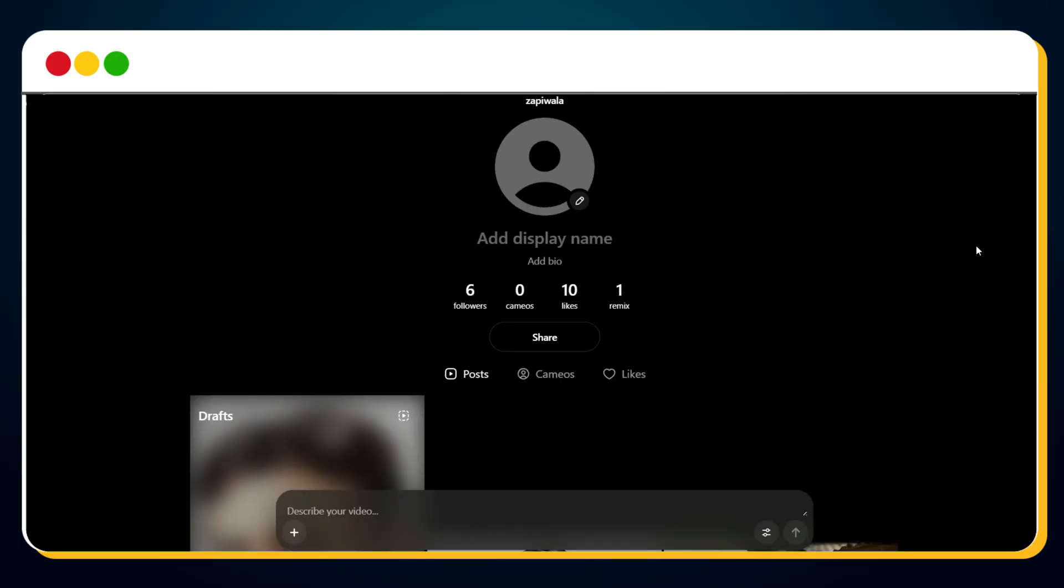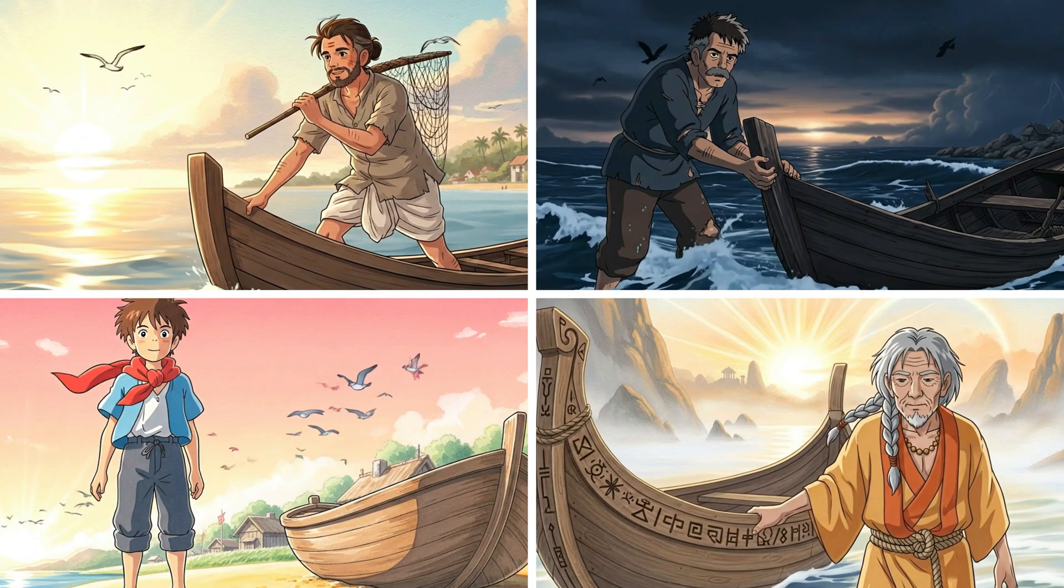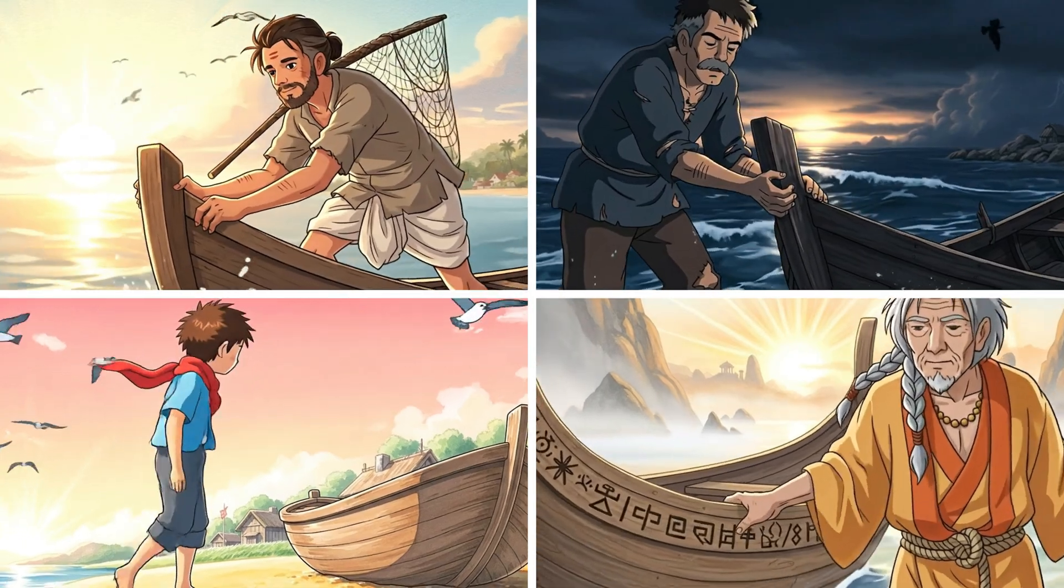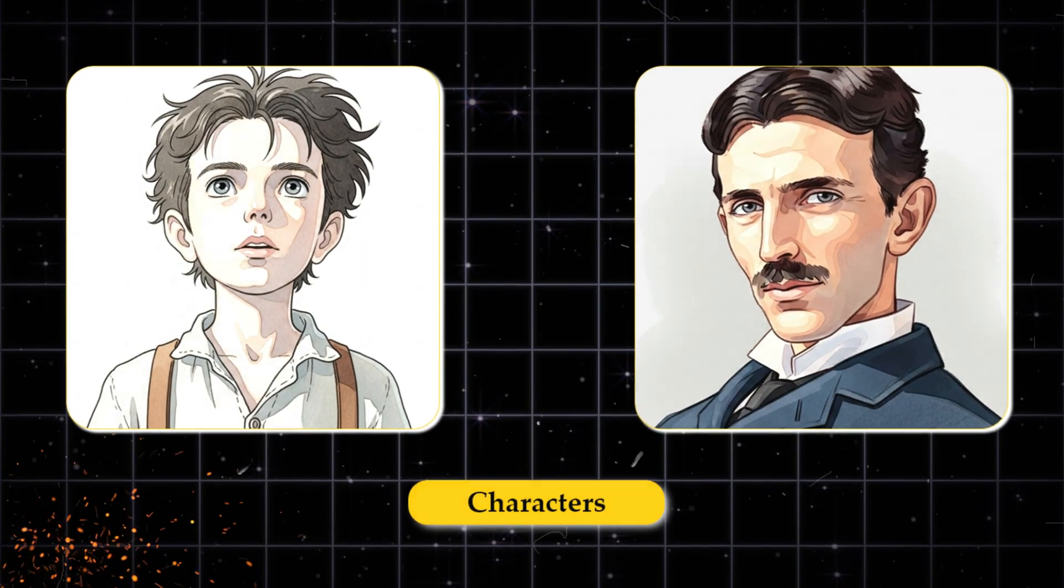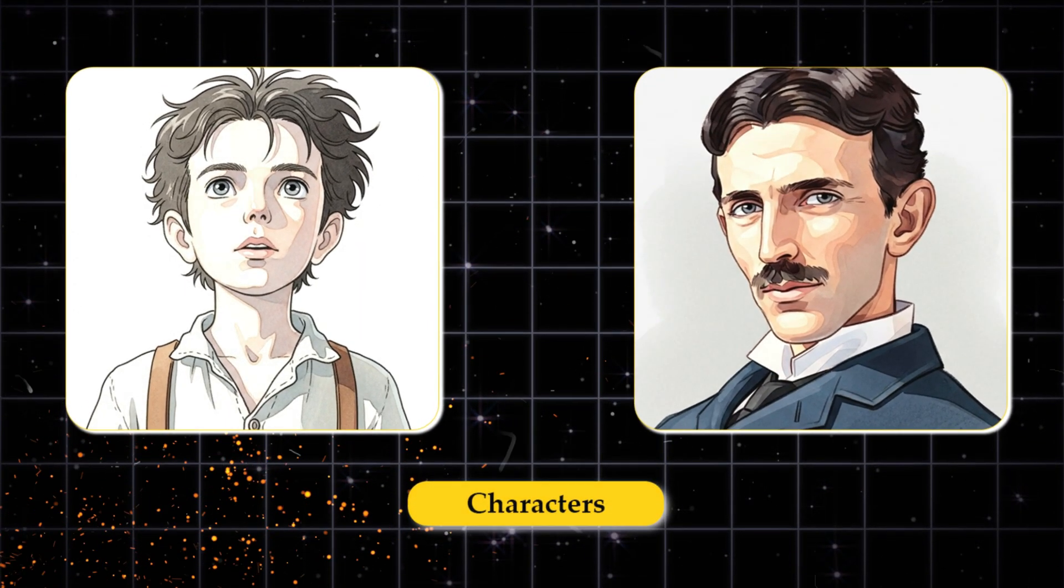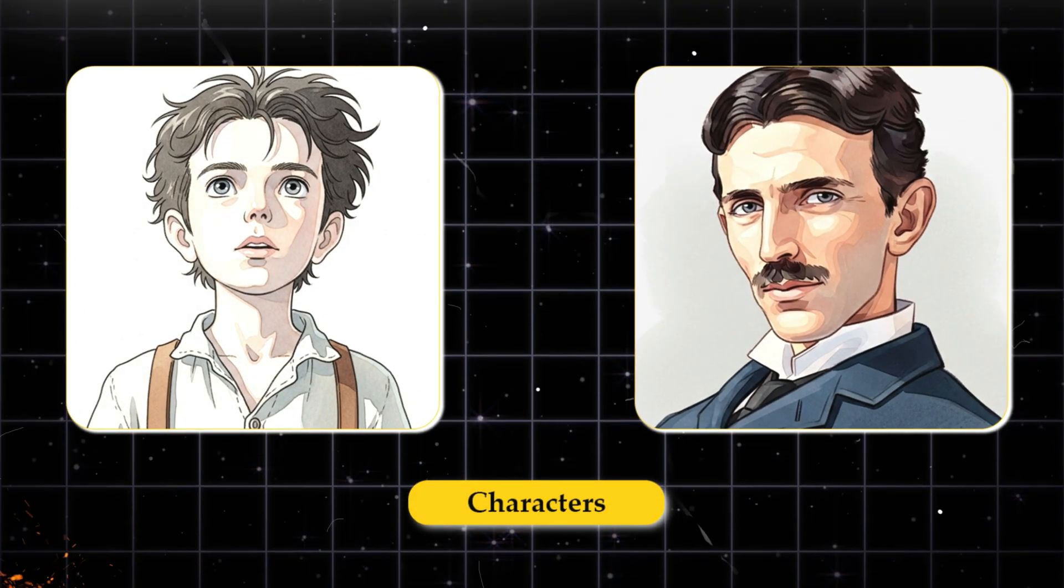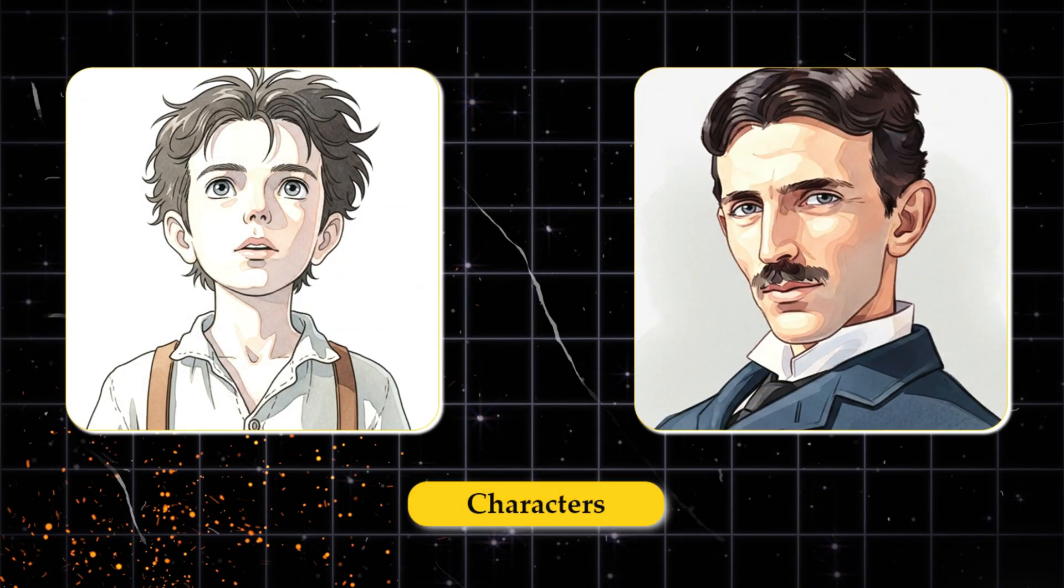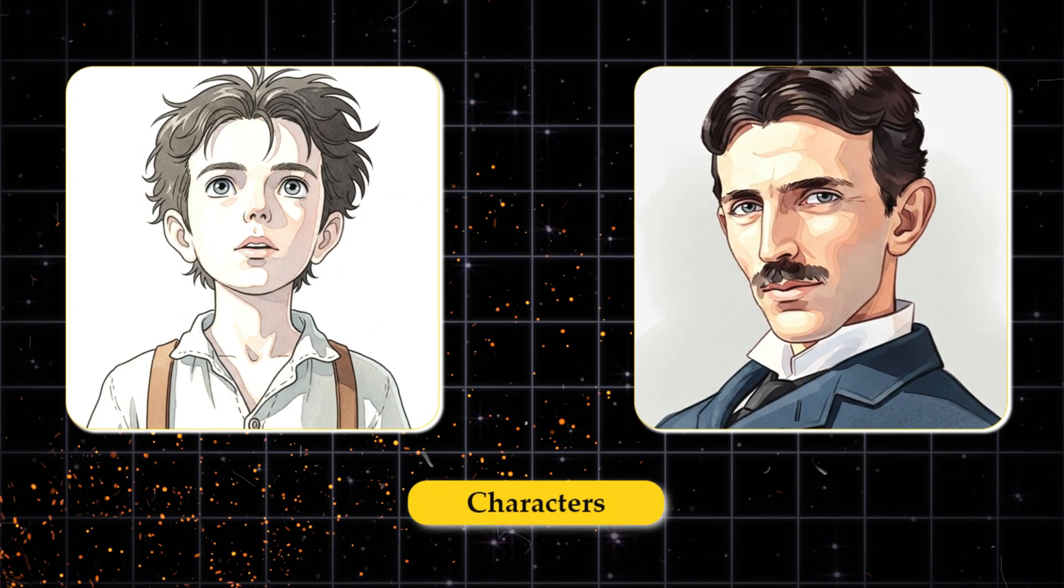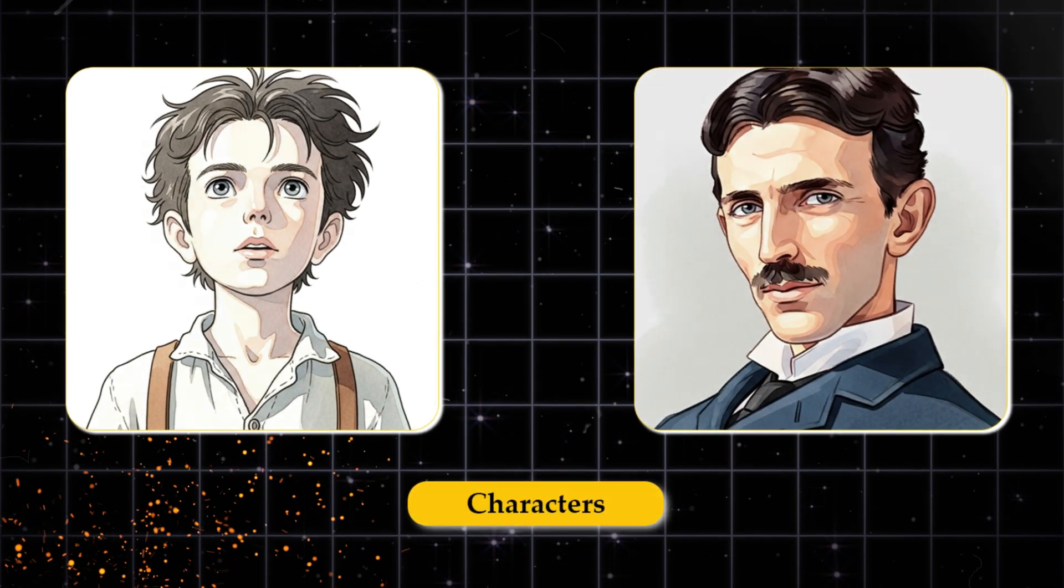Before we start using our prompts inside Sora 2, let's fix one last thing, character consistency across scenes. Do you remember those two character images we created earlier? Young Tesla and Adult Tesla? Now the question is, how do we know which version appears in which scene? This is where most creators get confused. Using the wrong character at the wrong point can break your story's flow. But don't worry, there's an easy way to automate this step.